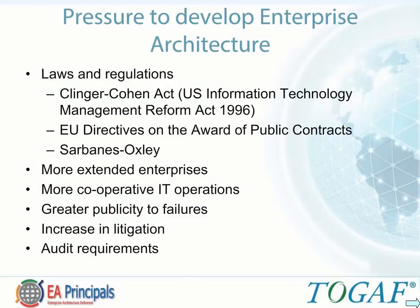There are a number of laws and regulations that have been drivers for the adoption and use of enterprise architecture in business, such as the Clinger-Cohen Act, also known as the U.S. Information Technology Management Reform Act of 1996. It was designed to improve the way the U.S. federal government acquires and manages information technology. It mandates the use of a formal enterprise architecture process for all U.S. federal agencies.